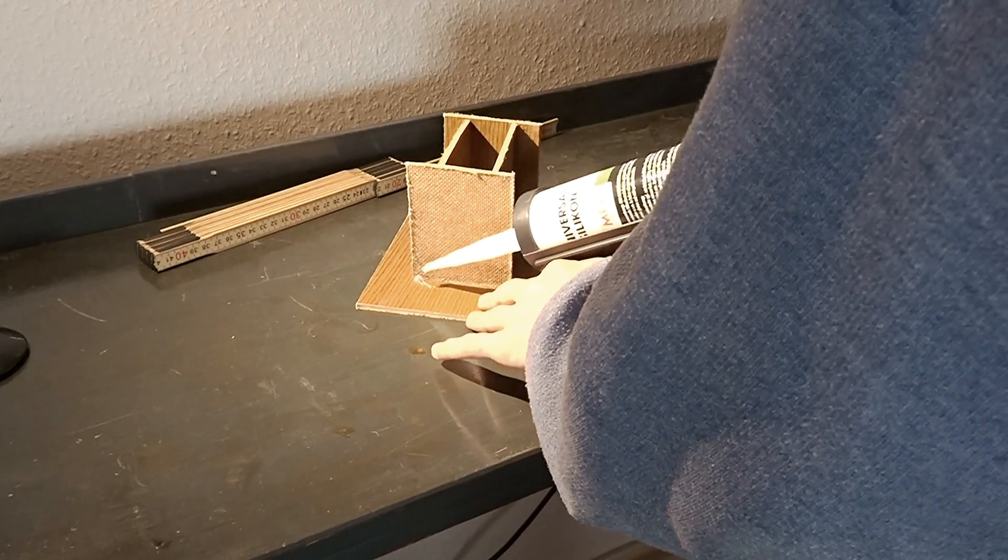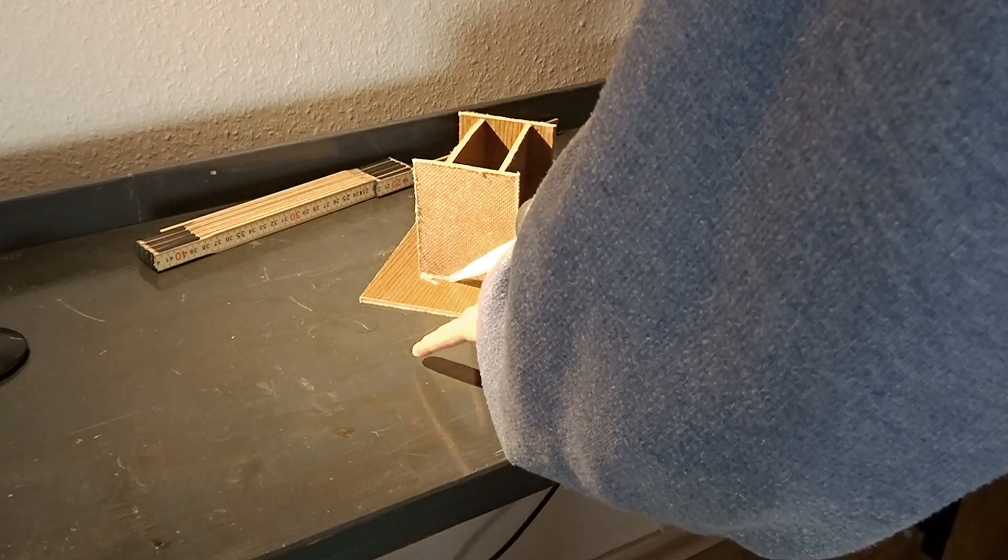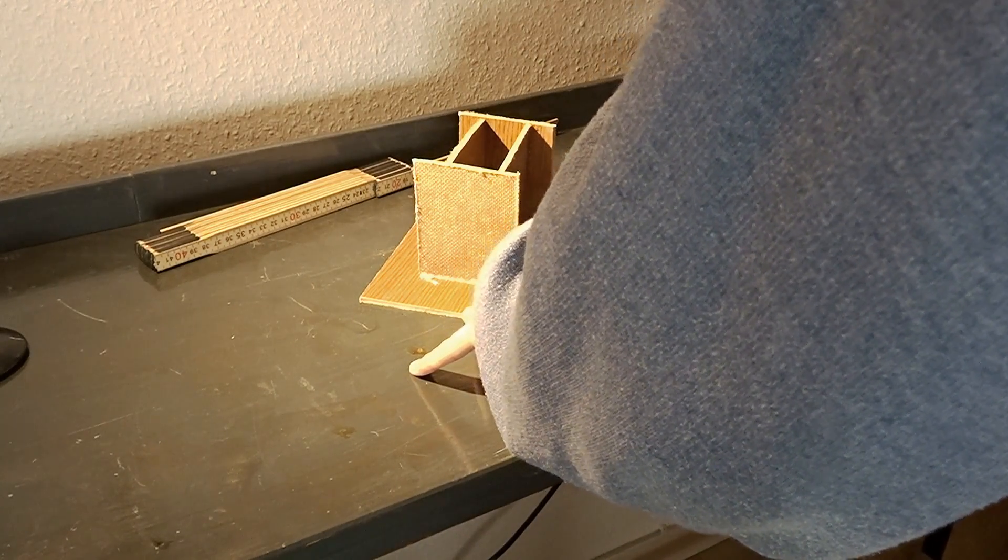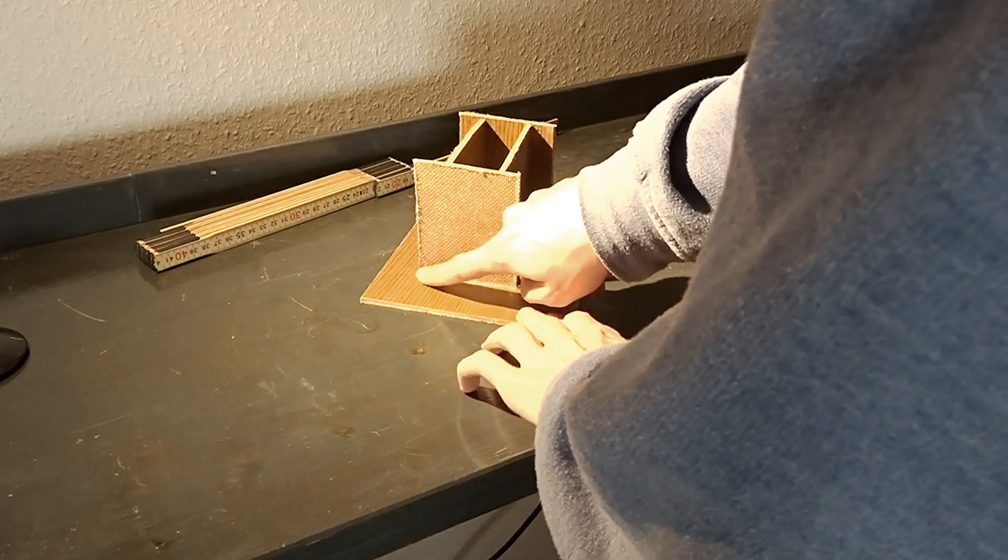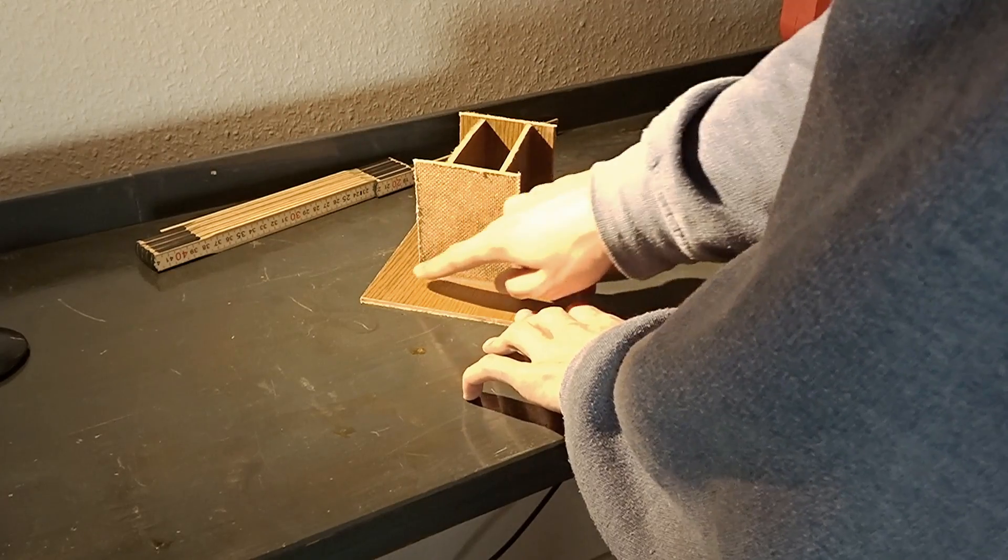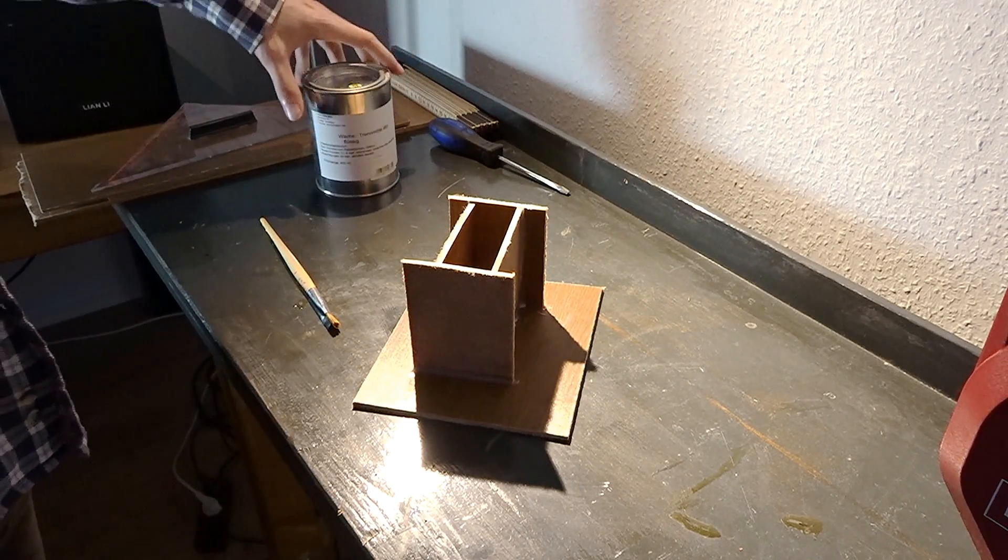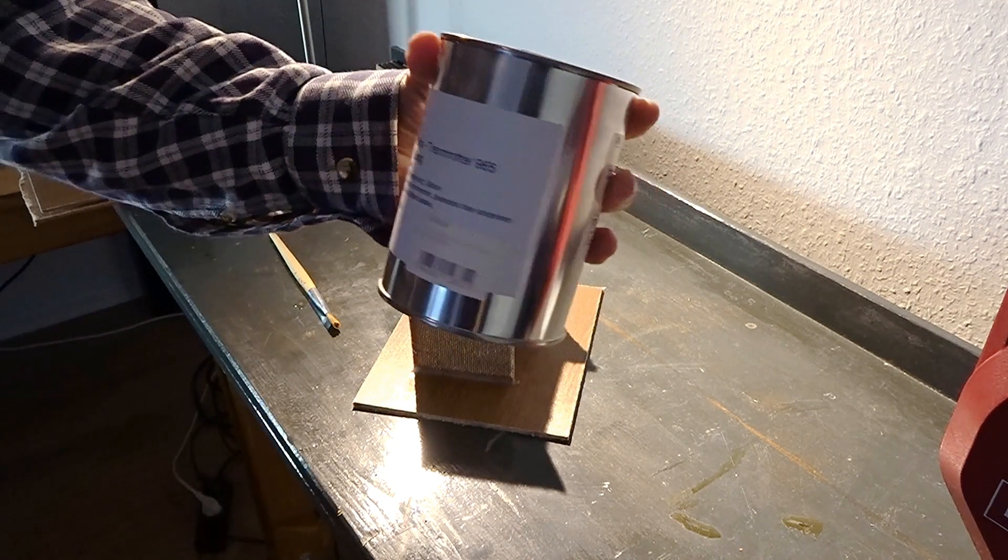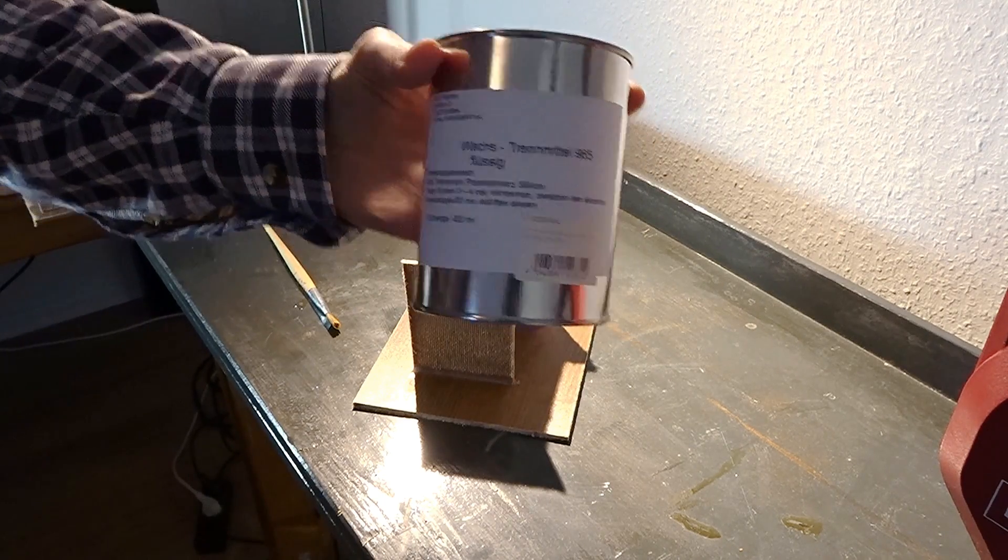After the glue has hardened, I go over every edge with the silicone sealant for bathrooms to make it watertight to prevent unpleasant surprises in case anything would leak out later on. Despite the smooth surface of the box, it would later be quite tricky to get the mold out of the box. So that's why you need to apply this separation wax.